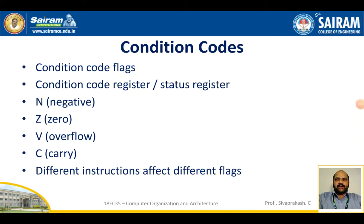Let's discuss conditional codes. The processor keeps tracking information about the result of various operations. This is accomplished by recording the required information in individual bits called conditional code flags. These flags are grouped together in a special processor register called the conditional code register, also called status flags or status register.